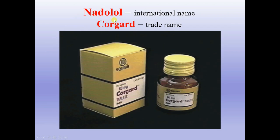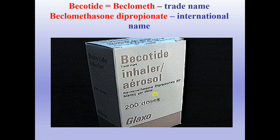For example, nadolol is the international name, while Corgard is the trade name. Similarly, Becotide and Beclomet are trade names, but the exact active substance is beclomethasone dipropionate — this is the international name that we will discuss in pharmacology.